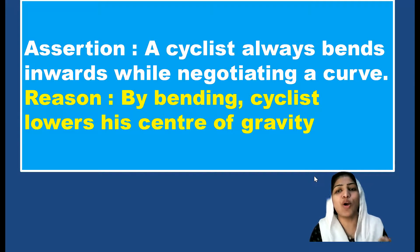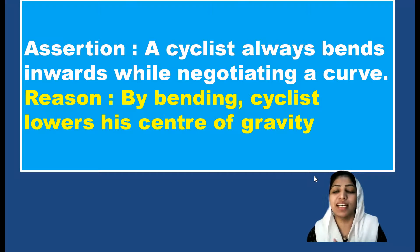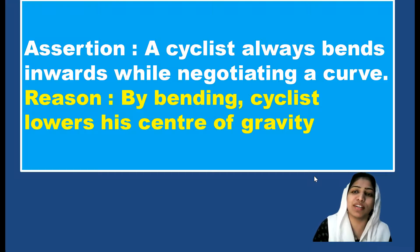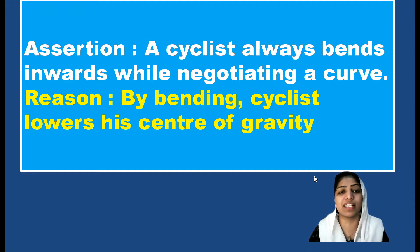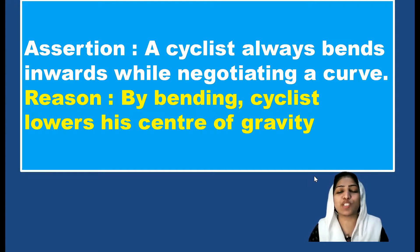A cyclist always bends inward while negotiating a curve. On sharp turns, cyclists and motorists have to bend towards the curve — that is the correct assertion. The reason is that by bending, the cyclist lowers their center of gravity, and this is done to provide the necessary centripetal force.